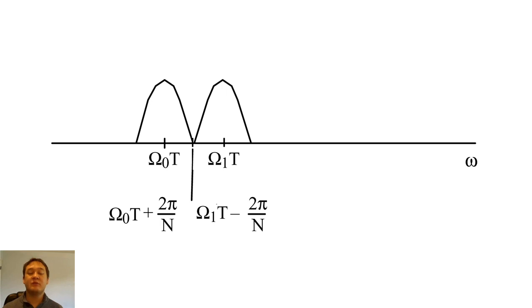If we want to ensure that we can resolve the two cosines peaks, we could require that the two main lobes do not overlap at all. This requirement would dictate that our window size times our sampling frequency must be greater than a scaled distance between the two frequencies.